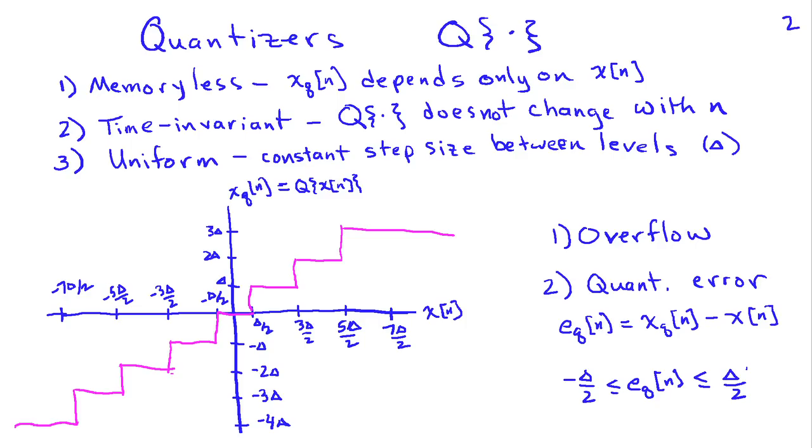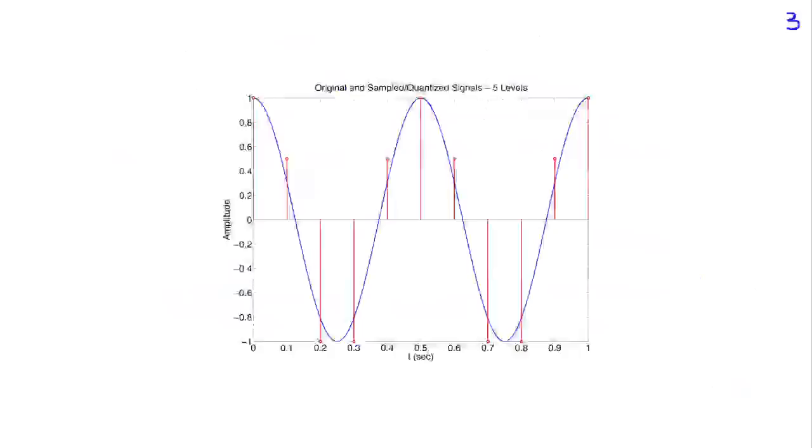Here's an example where I've shown the input as a continuous amplitude, continuous time signal. And then we're sampling, in this case we're sampling at t equals 0.1 seconds. So I've got a sample at 0, at 0.1, 0.2, and so on. So we're discretizing time by sampling at those intervals. And then I've shown an example here where there's five possible levels for the output amplitude.